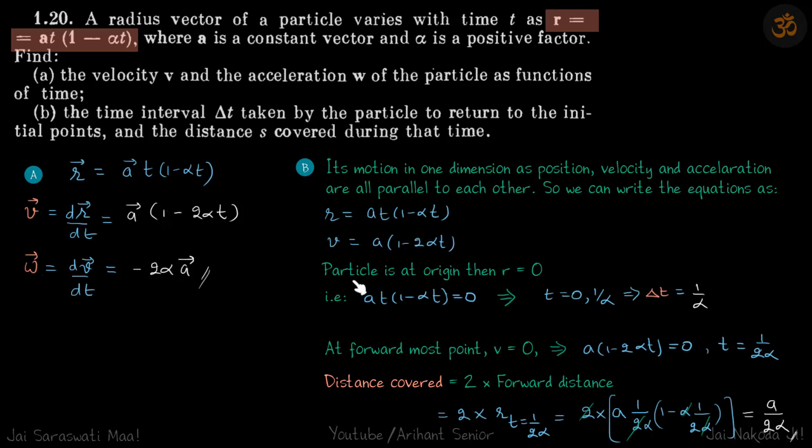Now particle is at origin when r equals 0. That happens at t equals 0 and t equals 1 by alpha. You just put r equals 0 and you will get two values of t. So at t equals 0 the particle was at rest, and then it moves and comes back and again crosses the origin. So delta t, the time interval between these two events, is 1 by alpha.